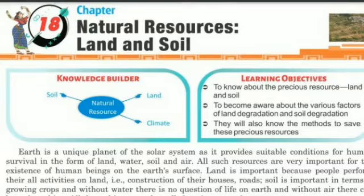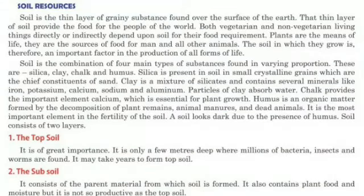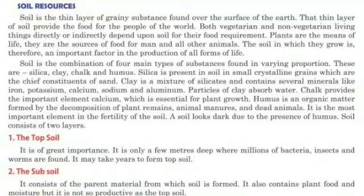Soil is a combination of four main types of substances: silica, clay, chalk, and humus. Silica is present in soil in small crystalline grains, which are the chief constituent of sand. Clay is a mixture of silicates and contains several minerals like iron.